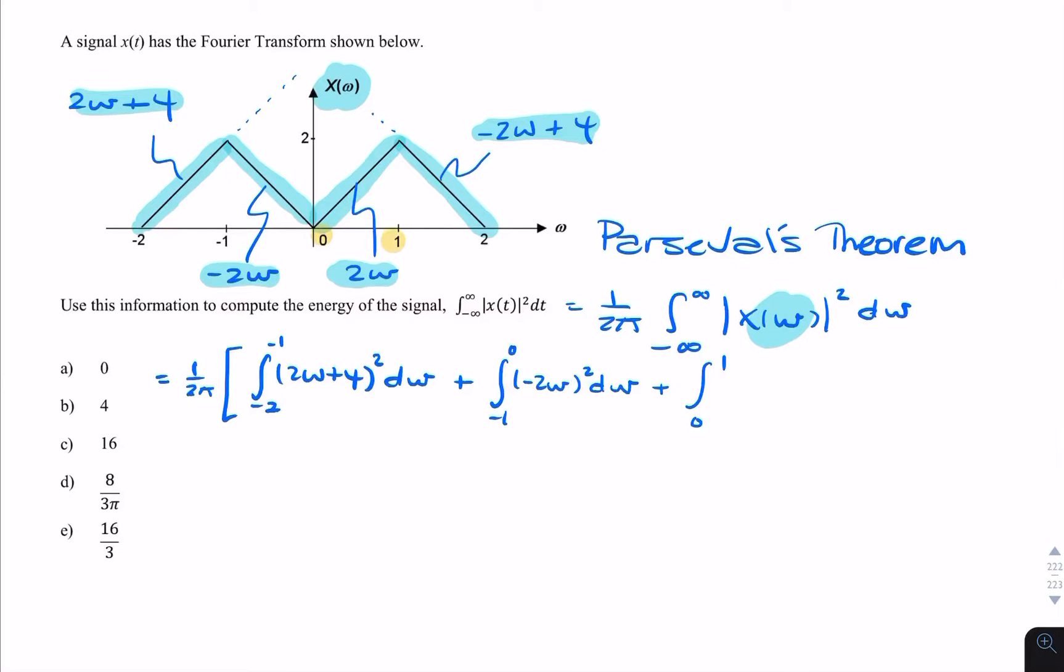That's from here to here of 2ω, so that's from here of (−2ω) squared dω. And finally the integral from 1 to 2 of (−2ω + 4) squared dω.